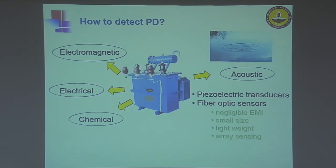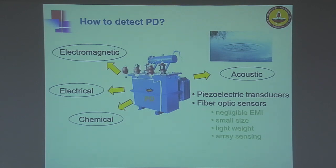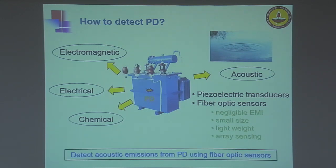Fiber optic sensors are made of dielectric material — that is, glass — making them completely immune to electromagnetic interference. This is highly justified because the transformer is a highly electromagnetically polluted environment, so this immunity helps achieve better sensitivity in our measurements. In addition to being small and lightweight, fiber optic sensors are also amenable to array sensing, which can help in localizing the partial discharge. In short, the focus of our research is to detect acoustic emissions from partial discharges using fiber optic-based sensors.